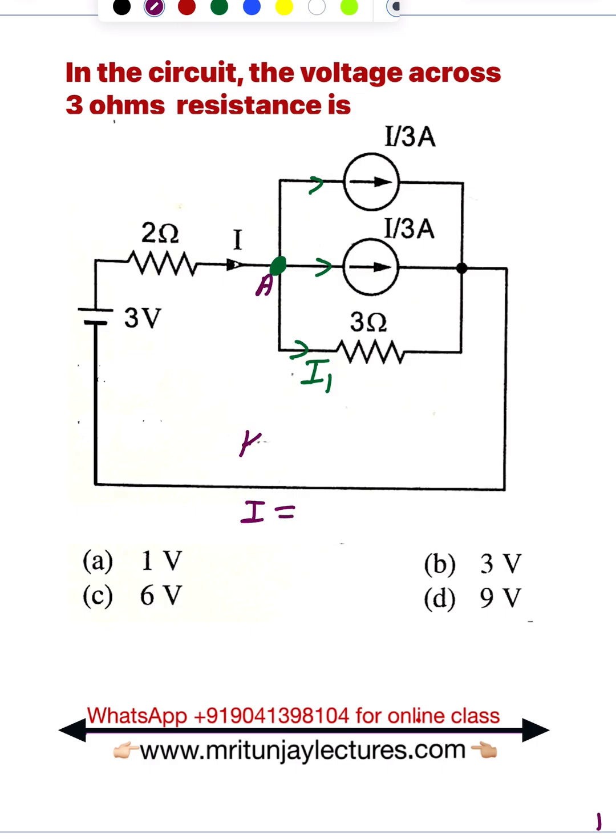Apply KCL at node A. So incoming current I equals outgoing currents I/3 plus I/3 plus I₁. So what about I₁?